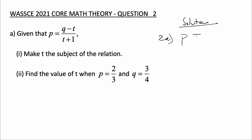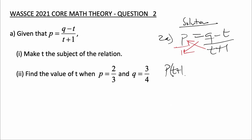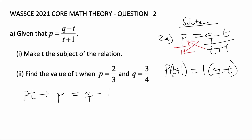We know that p is equal to (k minus t) all over (t plus 1). We can cross multiply — this is the same as p over 1 — so we get p multiplying (t plus 1) is equal to 1 multiplying (k minus t). When we expand we get pt plus p is equal to k minus t.